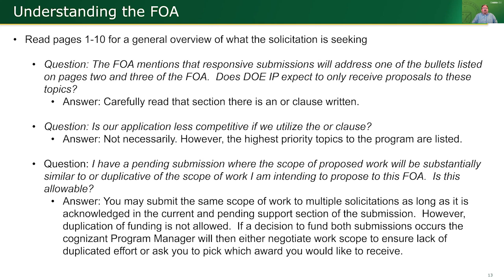The next question I typically get is: I have a pending submission where the scope of proposed work will be substantially similar or duplicative of the scope I intend to propose to this FOA — is that allowed? You can submit the same scope of work to multiple solicitations as long as you acknowledge it in the current and pending support section of your submission. However, duplication of funding is not allowed. If both submissions are selected for funding, the Cognizant Program Managers will reach out to the PI and either negotiate the scope to ensure no duplication, or ask you to choose which award to receive.